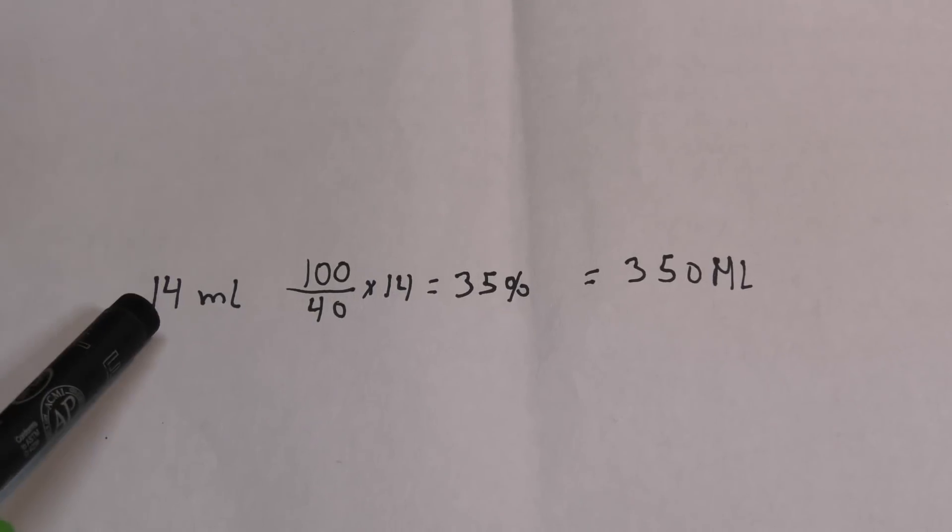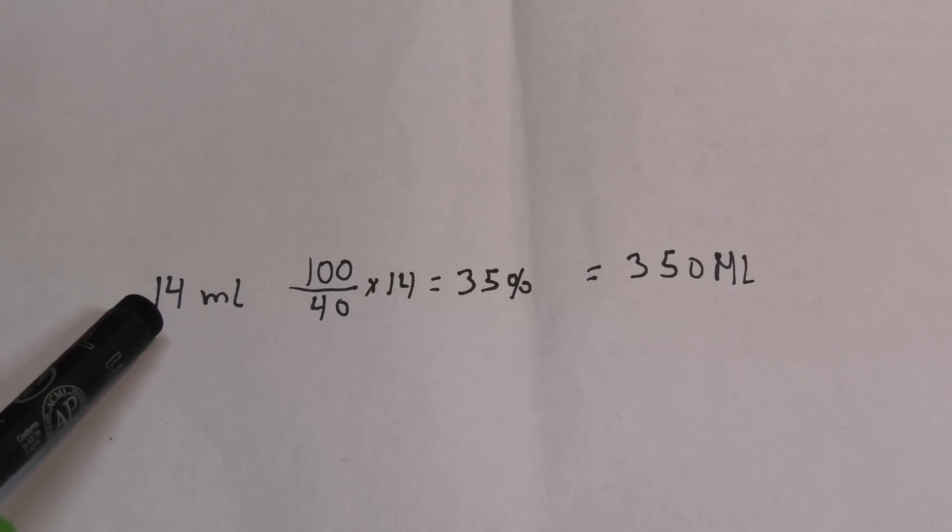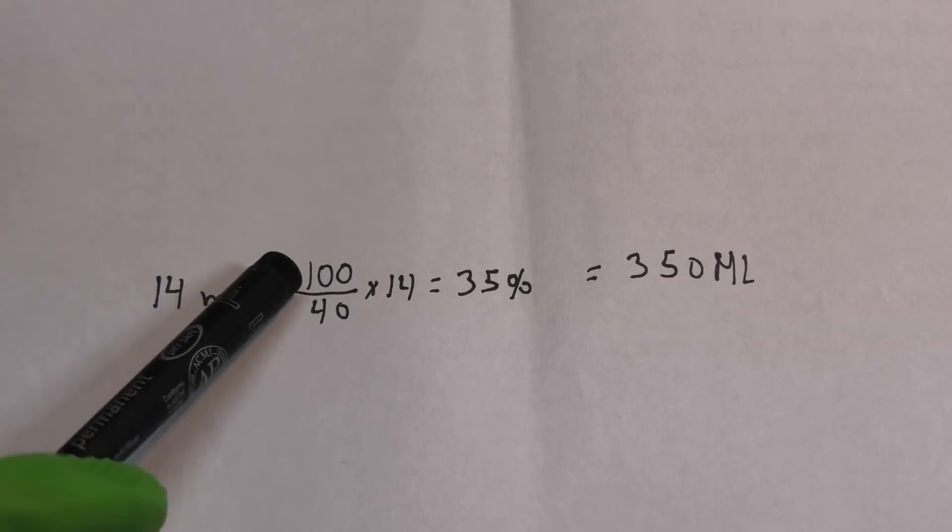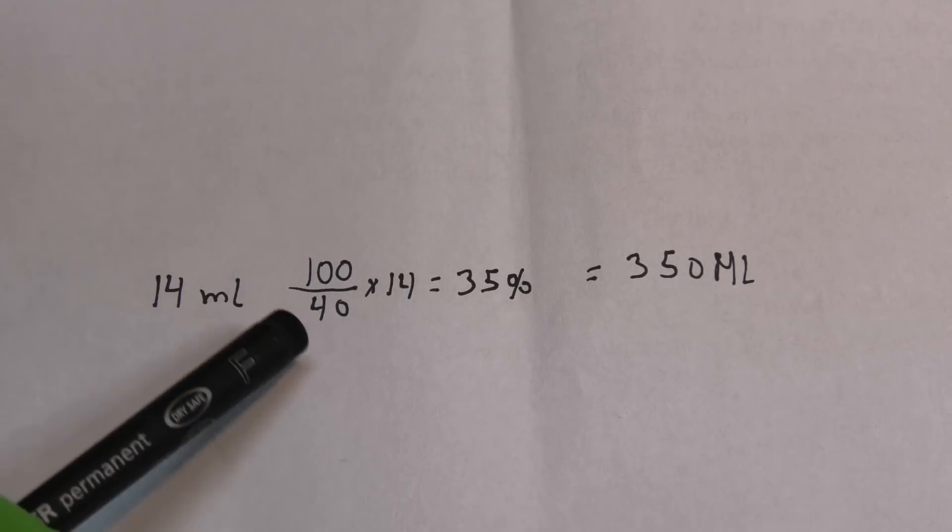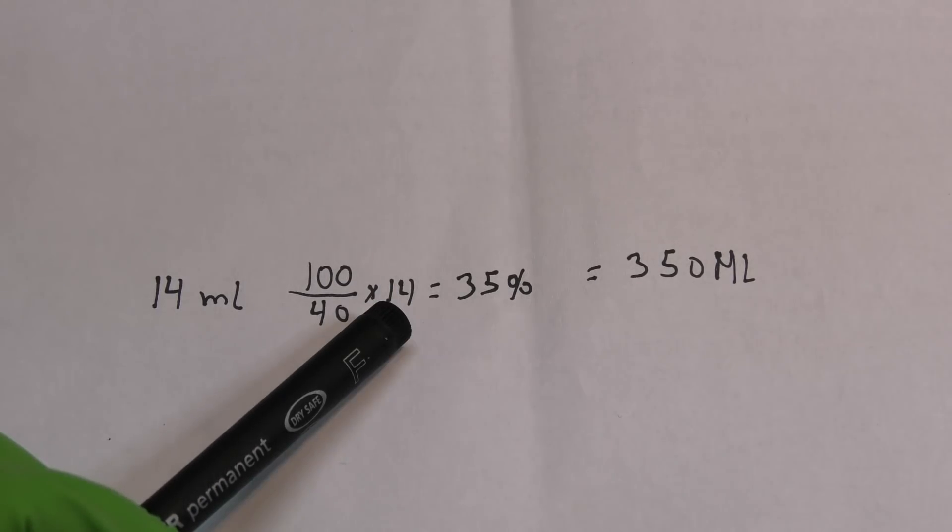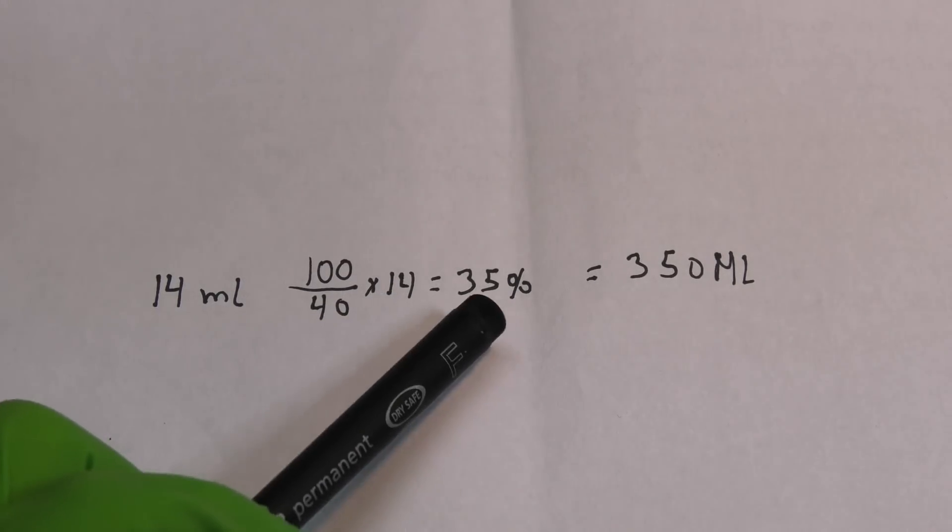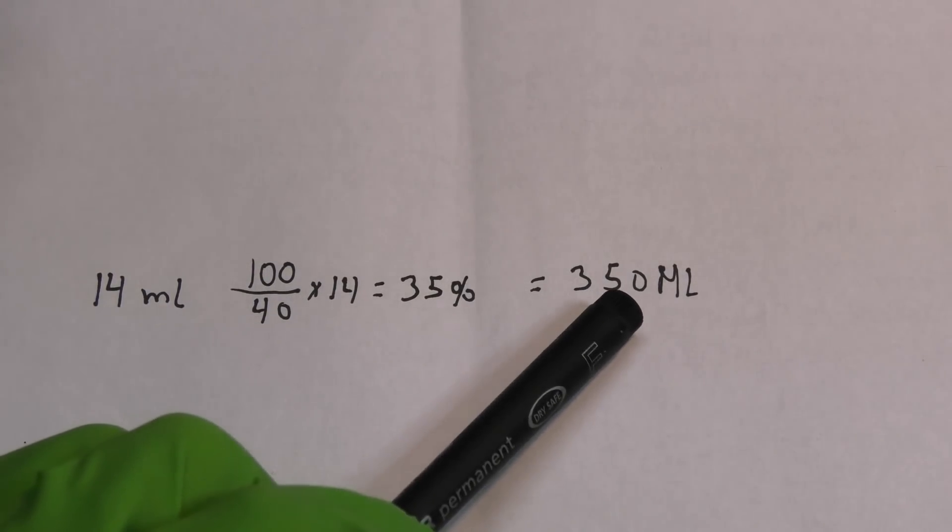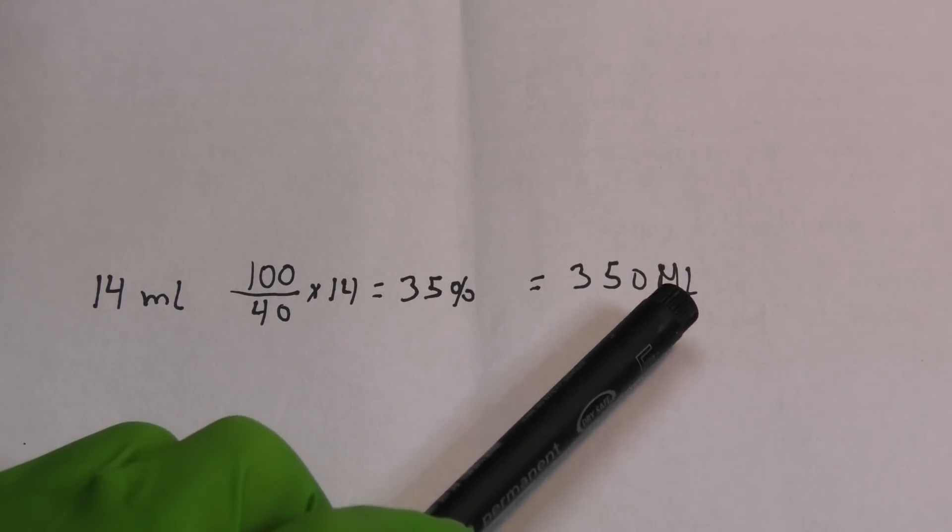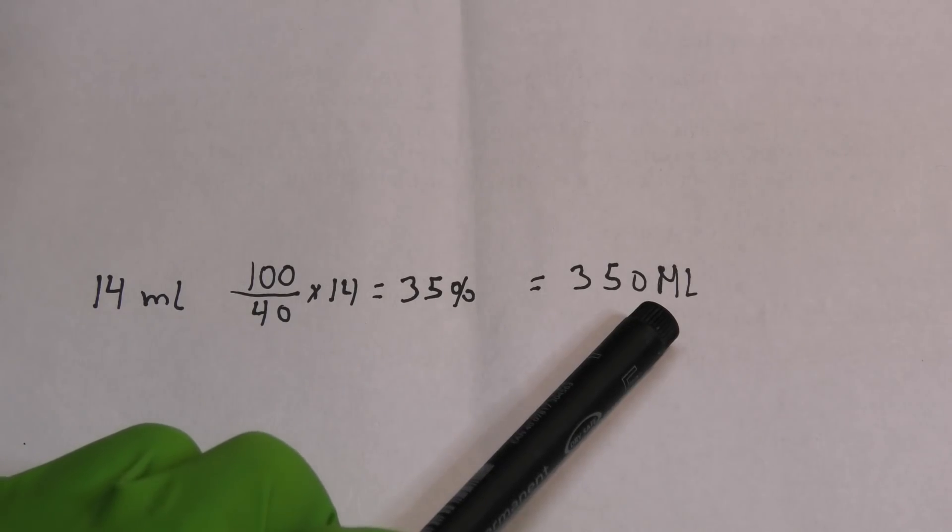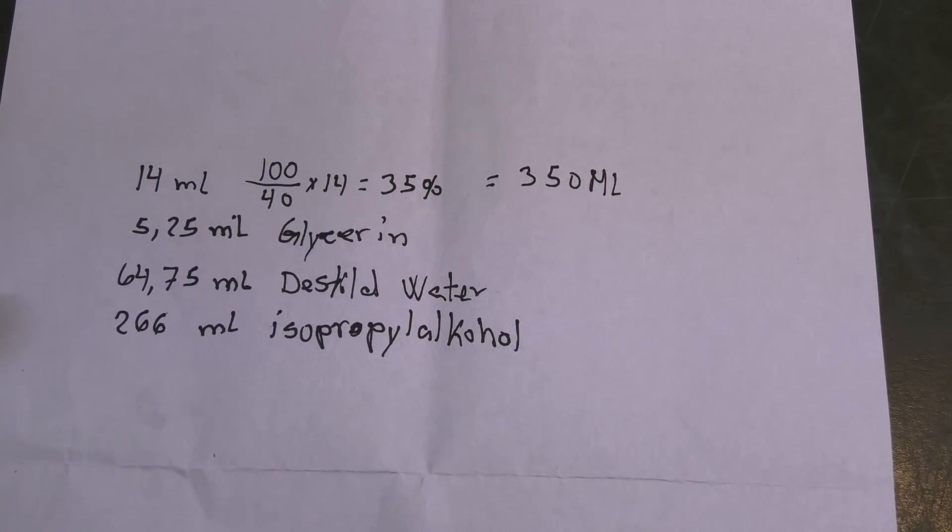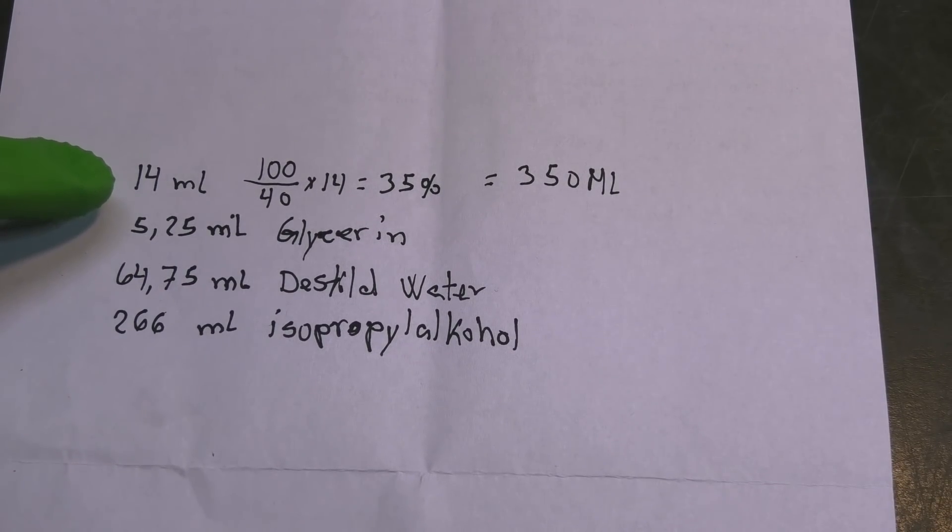Now I can do the math and figure out how much I can make. I have 14 milliliters here and I needed 40 to make one liter. I've taken 100 percent divided by 40 and multiplied it by 14 and found out that I have like 35 percent of what I needed. This means that I will be able to make 350 milliliters of hand sanitizer.